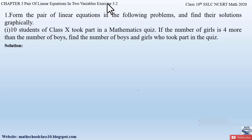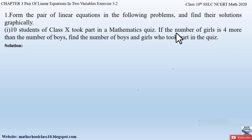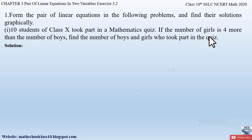Question number one from exercise 3.2 says: form the pair of linear equations in the following problems and find the solutions graphically. The first part says: 10 students of class 10th took part in a mathematics quiz. If the number of girls is 4 more than the number of boys, find the number of boys and girls who took part in the quiz.